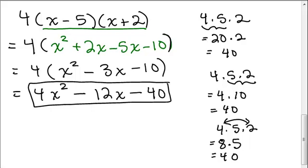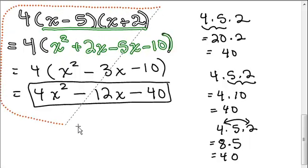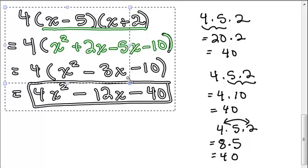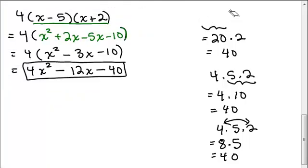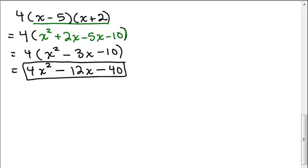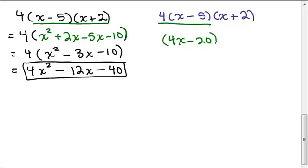Now what if instead you wanted to do this by just going left to right. You wanted to do the 4 times the x minus 5 first. That's also fine. So we could see the steps we did that way. And now let's do this problem going left to right. So we have 4 times x minus 5 times x plus 2. Let's go ahead and multiply these together first. Those two factors. So I'm going to have to do the distributive property. That will give me 4 times x which is 4x minus 4 times 5 which is 20. And now I have to remember to multiply that times the x plus 2.